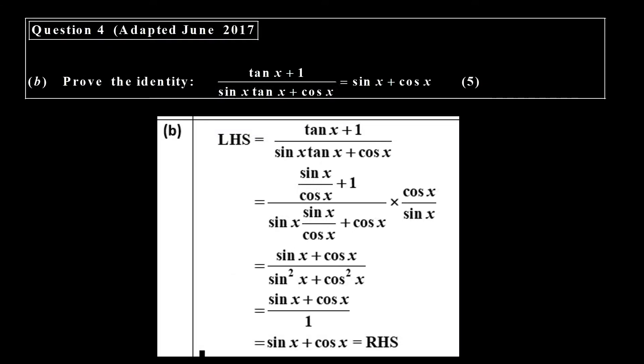In June 2017, there's an identity. We have to prove the left side equal to the right side. You have to use your identity for tangent, and then you get your answer there. I don't want to go through the details.